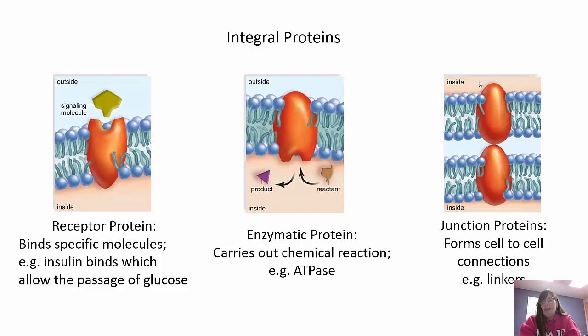Then we have junction proteins. These form cell-to-cell connections, allowing cells to stick together, which of course is very important so cells aren't just floating all over the place.